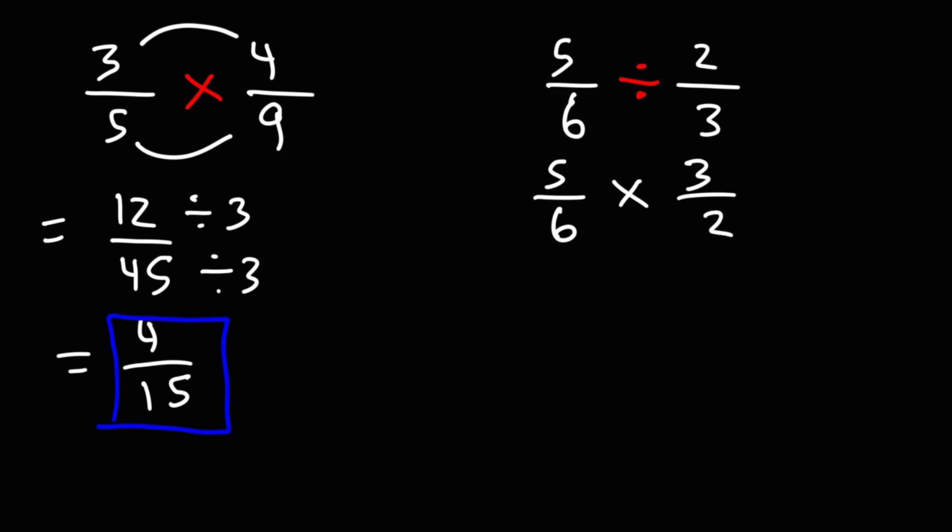And now we're just multiplying two fractions, so we can multiply across. 5 times 3 is 15. 6 times 2 is 12. Notice that 15 and 12 are both divisible by 3, so we can simplify this fraction. 15 divided by 3 is 5. 12 divided by 3 is 4.